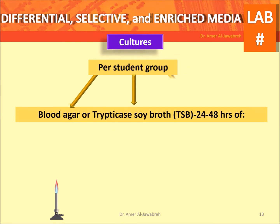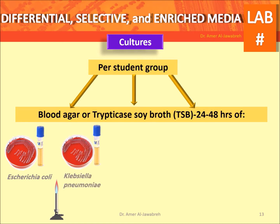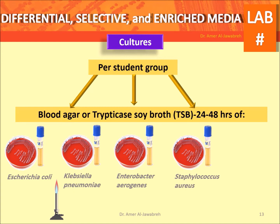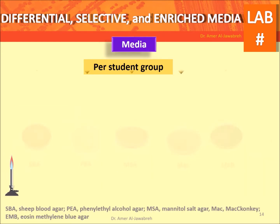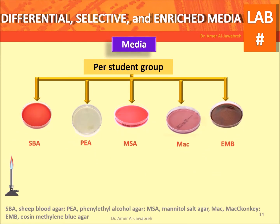Cultures: provide each student group with five types of bacteria — Escherichia coli, Klebsiella pneumoniae, Enterobacter aerogenes, Staphylococcus aureus, and Streptococcus pyogenes. Media: provide each student group with five types of media — SBA, PEA, MSA, MacConkey, and EMB.